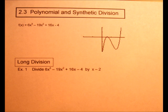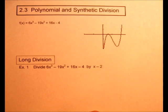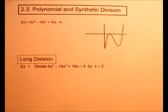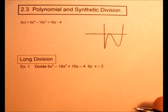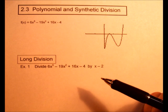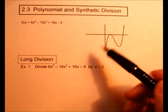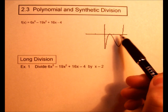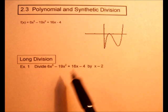Hello, today we're going to look at section 2.3, polynomial and synthetic division. So we're going to be dividing polynomials together. And what we're going to ultimately do is factor these things out and then find the zeros, which is where it crosses the x-axis.